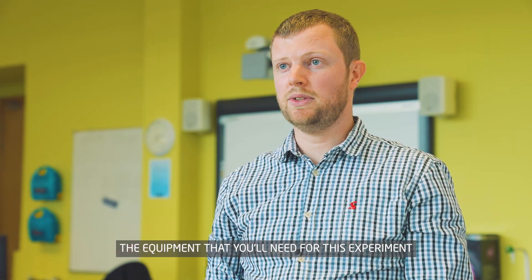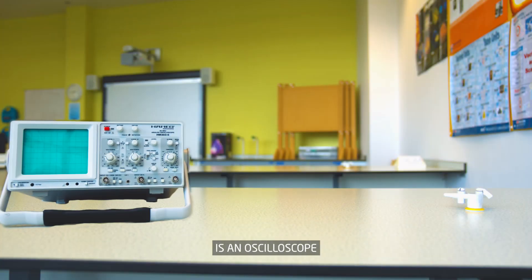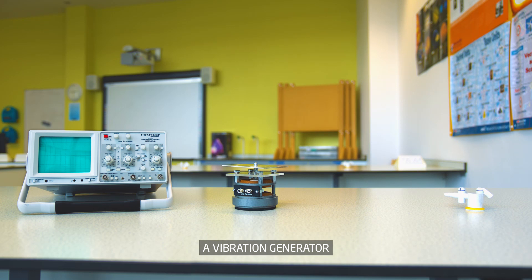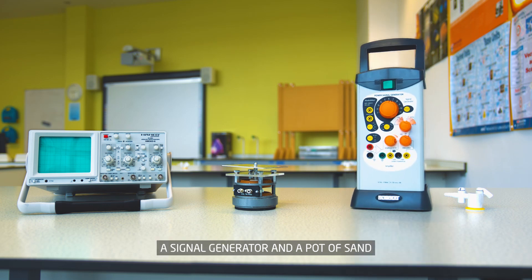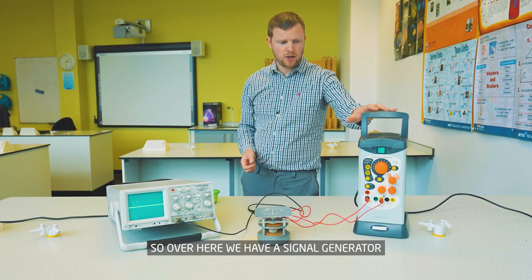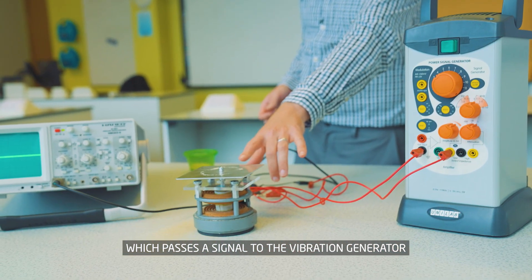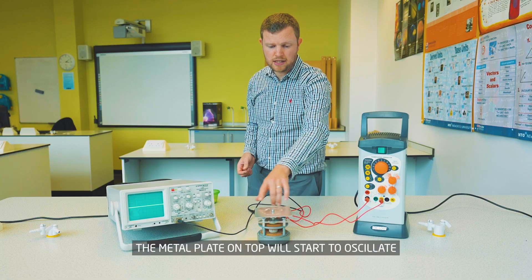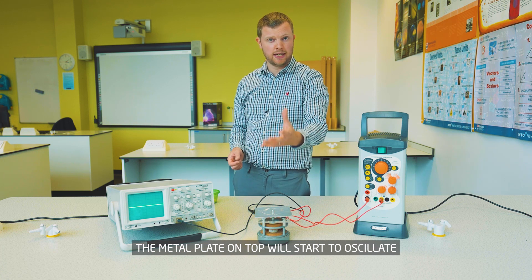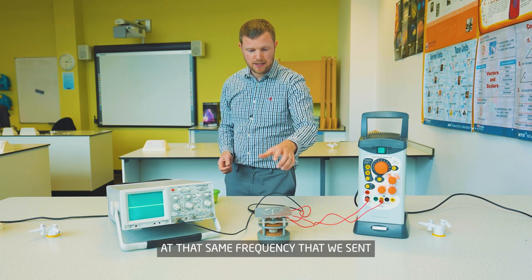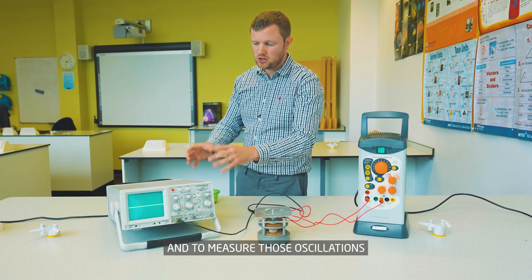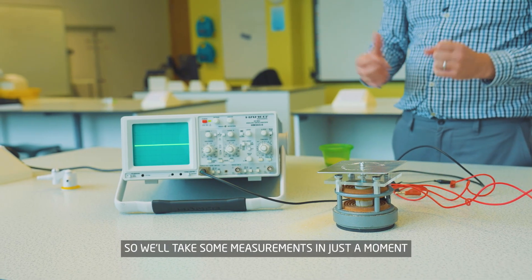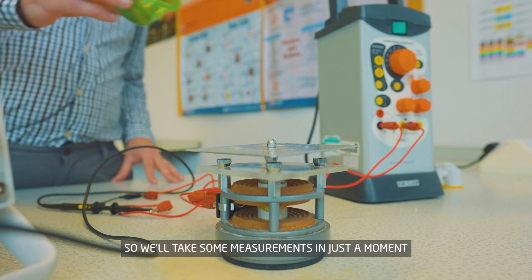The equipment you'll need for this experiment is an oscilloscope, a vibration generator, a signal generator, and a pot of sand. The signal generator passes a signal to the vibration generator, and the metal plate on top will start to oscillate at that same frequency. To measure those oscillations we'll use this oscilloscope.